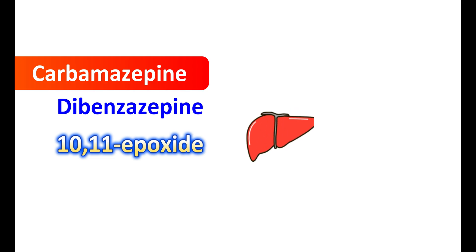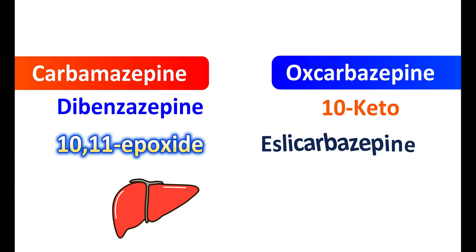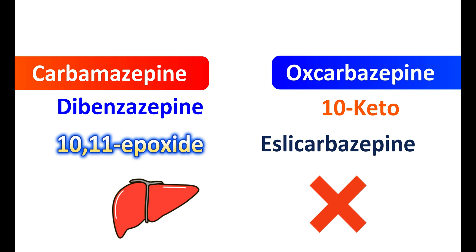Regarding metabolism: carbamazepine is a dibenzoazepine derivative. It is metabolized in the liver and can produce an active metabolite, carbamazepine-10,11-epoxide. This epoxide is a toxic metabolite that can produce liver damage on accumulation. However, oxcarbazepine is a structural analog of carbamazepine with a modification at the 10th position — it is a 10-keto analog of carbamazepine, and therefore it cannot produce the epoxide metabolite. Instead, it acts as a prodrug and is metabolized into its active form S-licarbazepine, the S-isomer of licarbazepine. This active metabolite does not produce liver damage and acts as a weak enzyme inducer. On the other hand, carbamazepine and its metabolites act as strong inducers of cytochrome P450 enzymes. Therefore, oxcarbazepine produces fewer adverse effects on the liver and has fewer drug interactions.